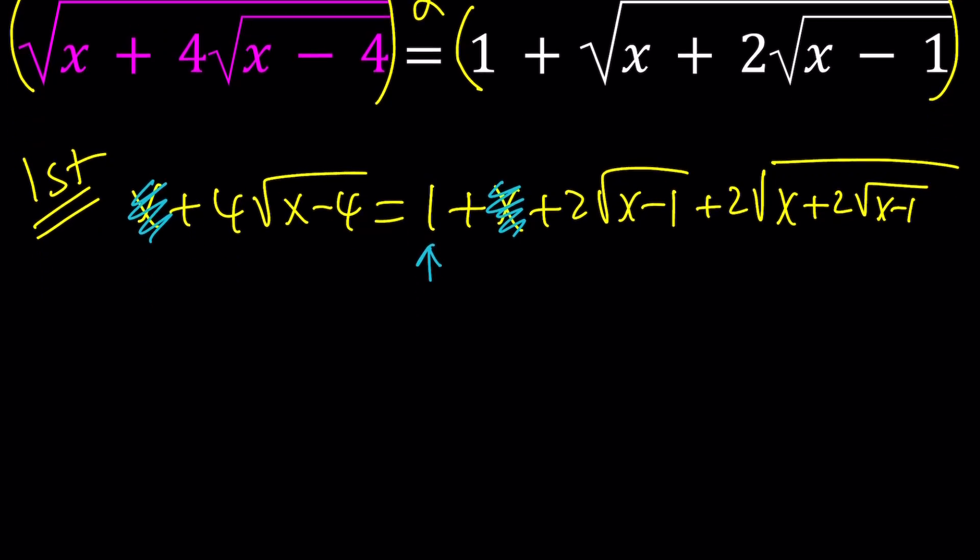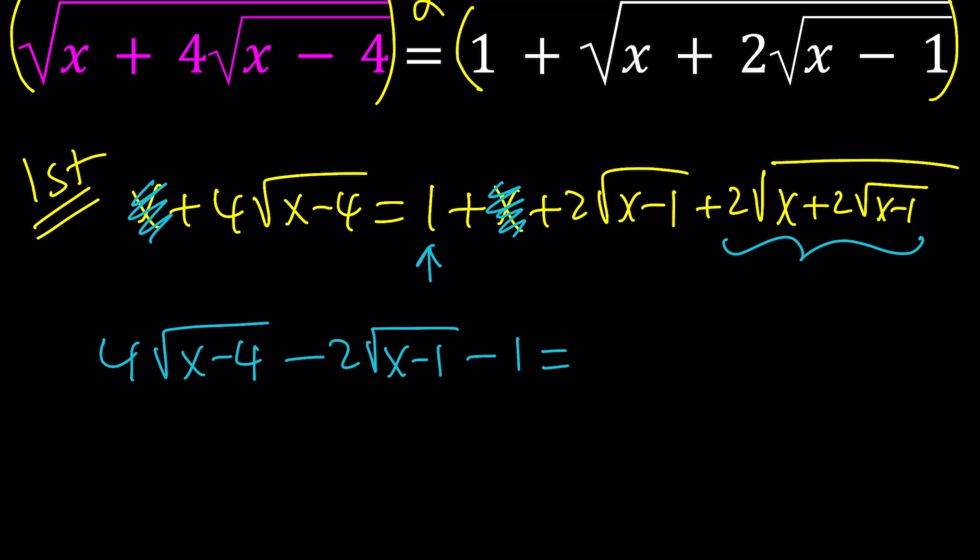And maybe do a little bit of putting some radicals on the same side. Since this looks to be a more complicated radical, let's put everything else on the left-hand side. So we're going to get something like this: 4 times the square root of x minus 4 minus 2 times the square root of x minus 1 minus 1 equals 2 times the square root of x plus 2 times the square root of x minus 1. Looks good?